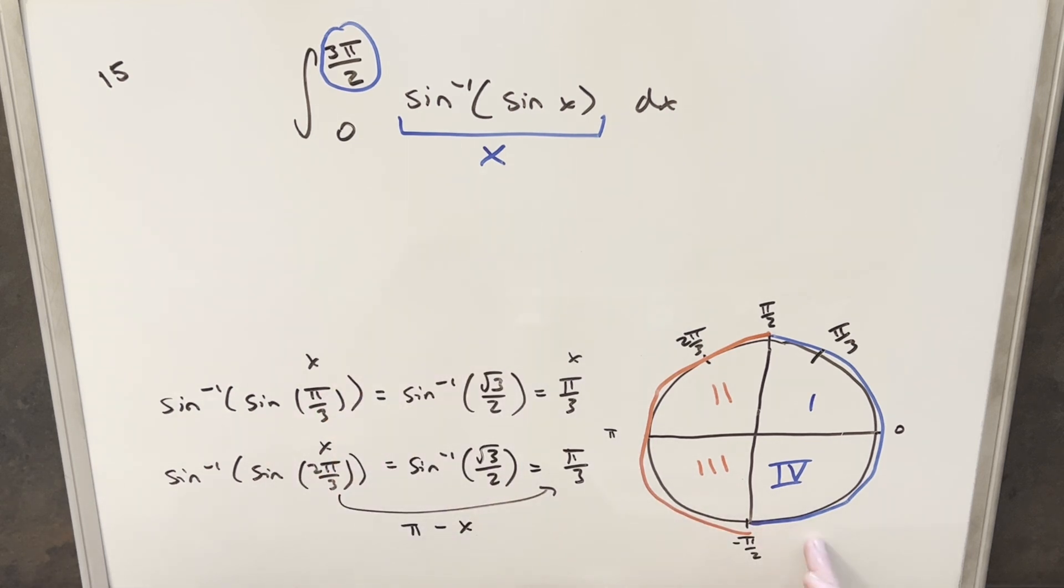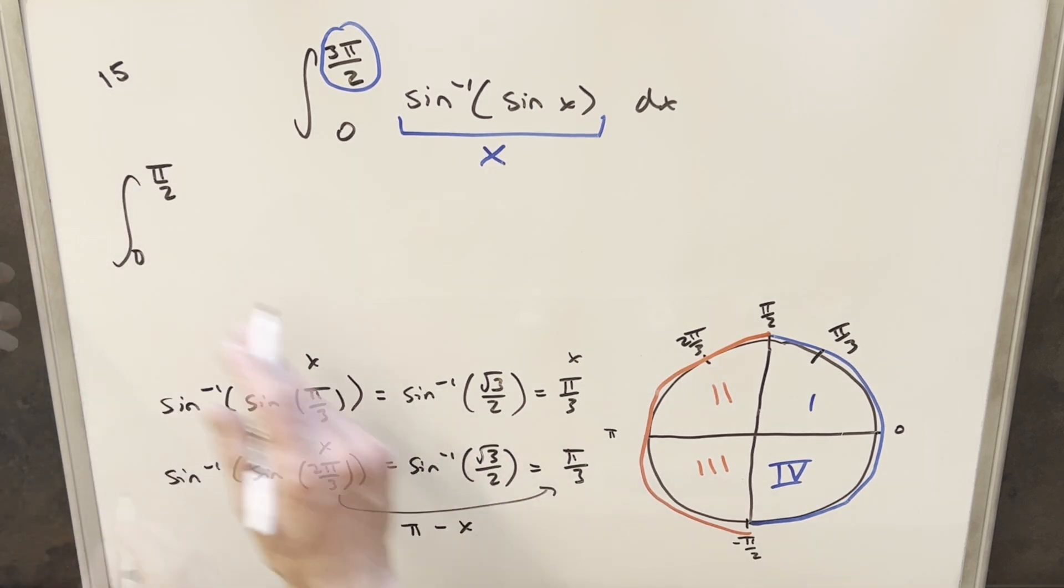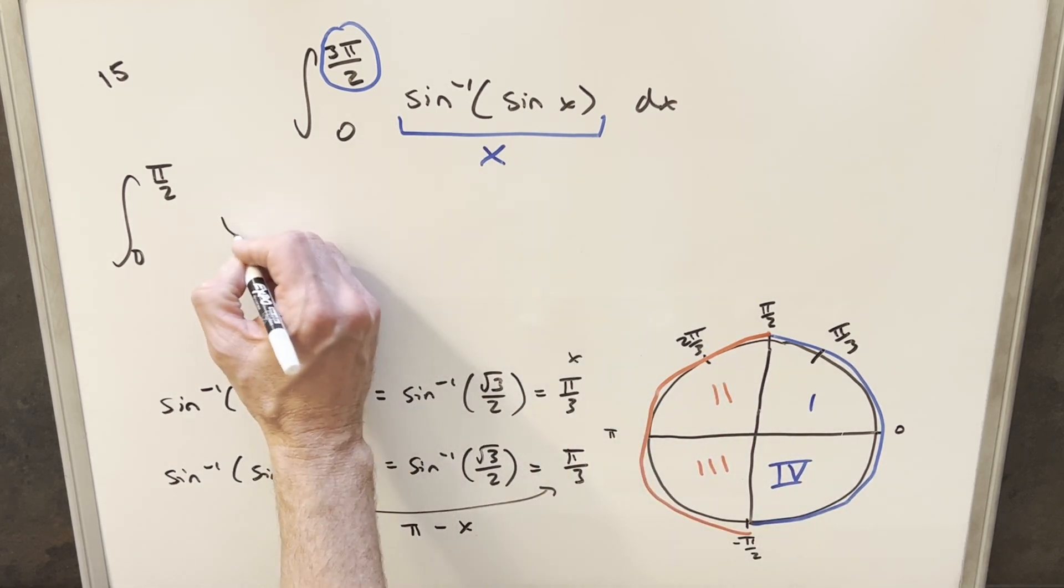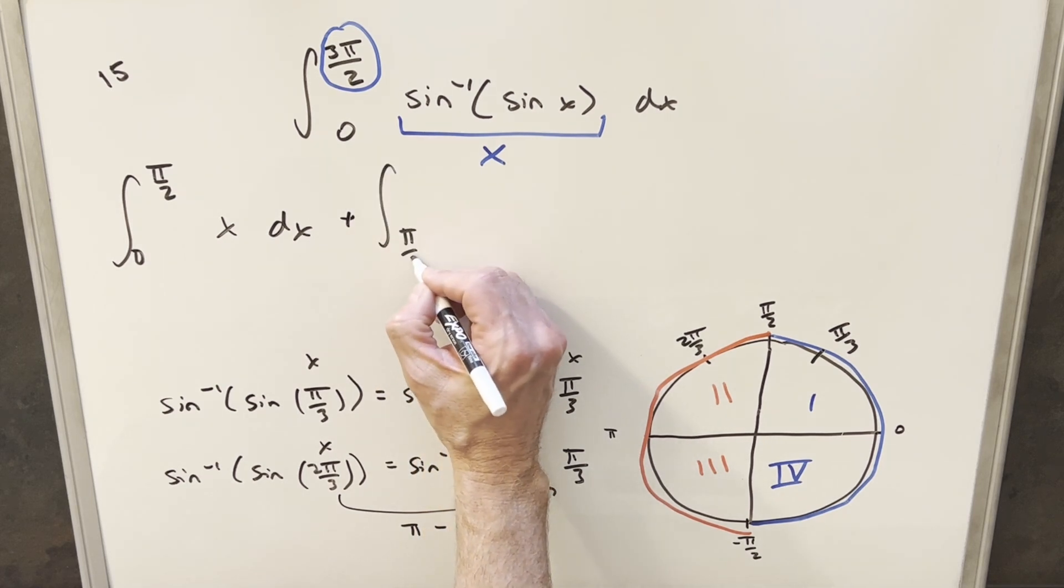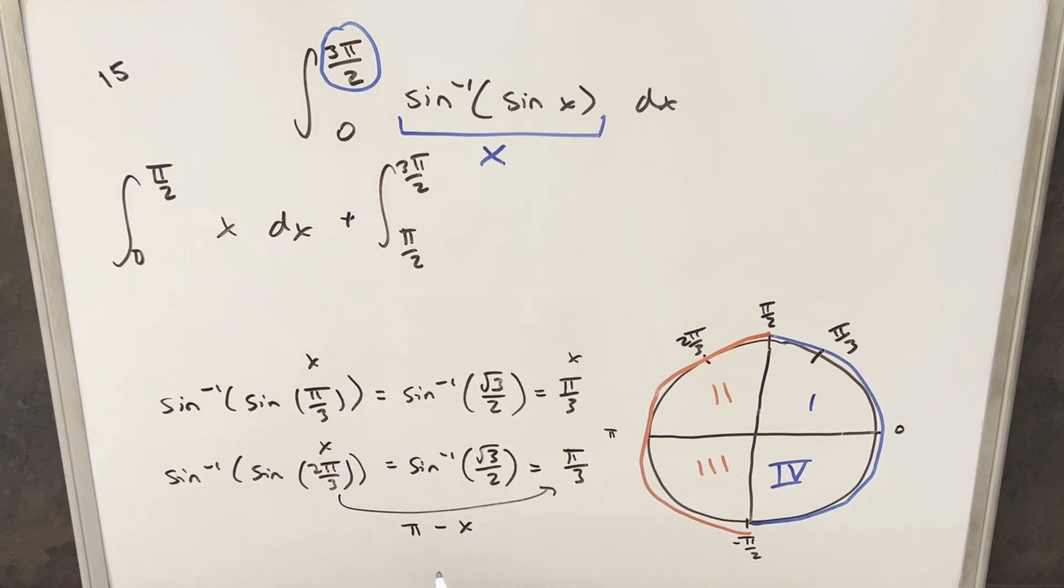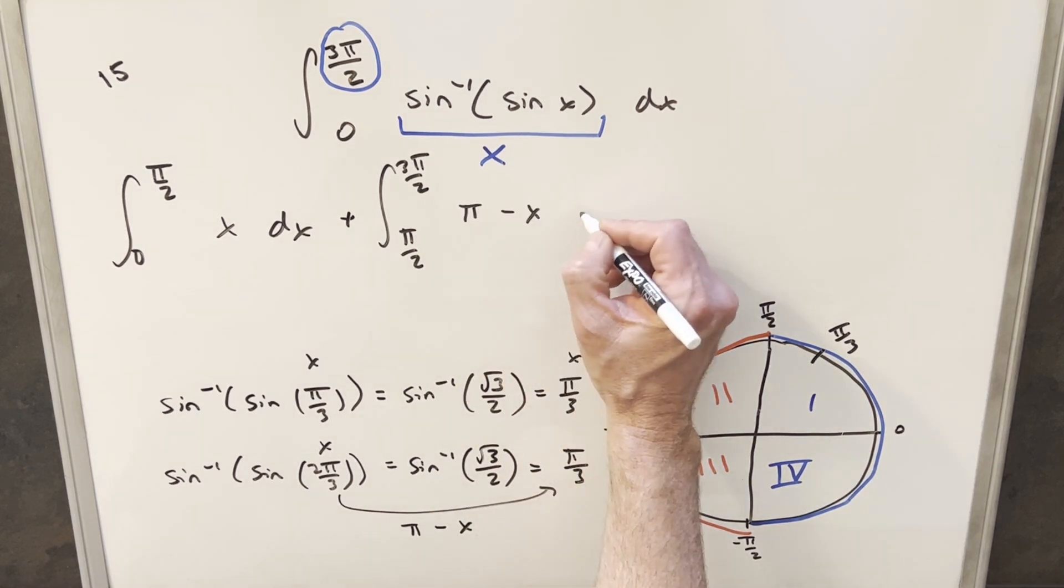But we can actually use π - x for anything over here in quadrants 2 and 3. So getting back to our graph, what we really need to do is split it into these two cases, the blue case and the red case, and we have this break at π/2. So what I'll do is, for my first integral, we'll have this going from 0 to π/2. We found in that area from 0 to π/2, arcsin(sin(x)) is just x over there. But then we just need to cover the rest of this integral, so what we can do now is integrate from π/2 all the way to the end, which is 3π/2. But for that region, arcsin(sin(x)) is just going to be π - x.